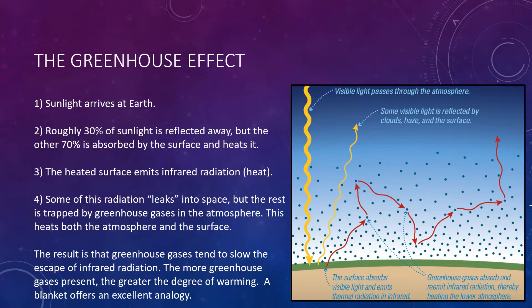The net result is that greenhouse gases tend to slow the escape of infrared radiation from the lower atmosphere, while their molecular motions heat the surrounding air. In this way, the greenhouse effect makes the surface and the lower atmosphere warmer than they would be from sunlight alone. The more greenhouse gases present, the greater the degree of surface warming.